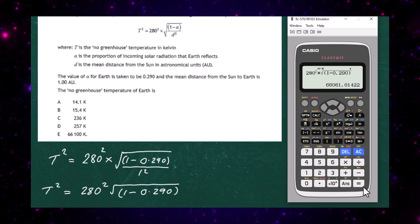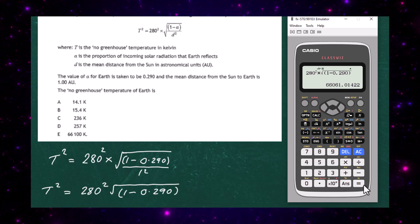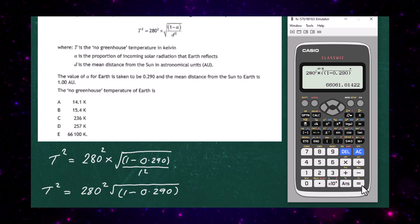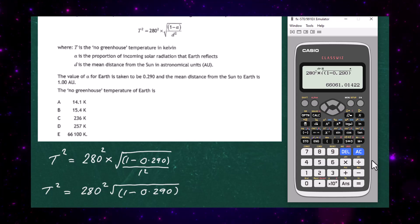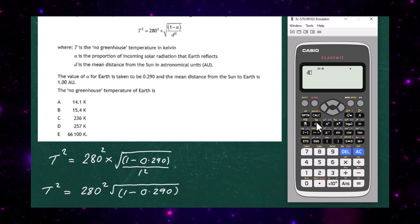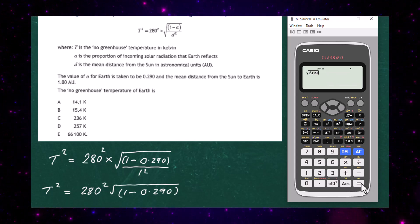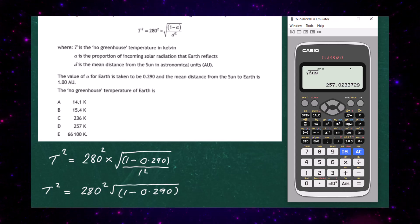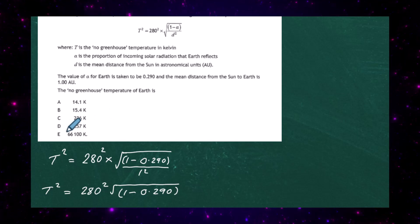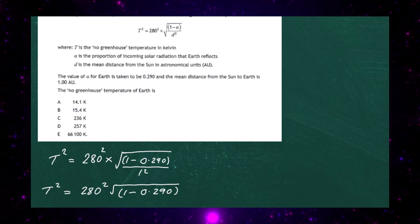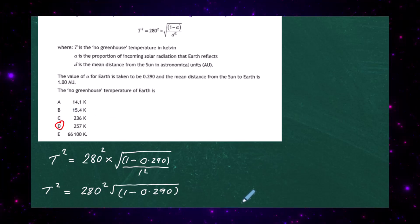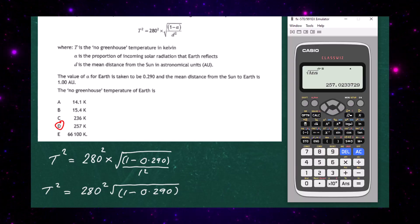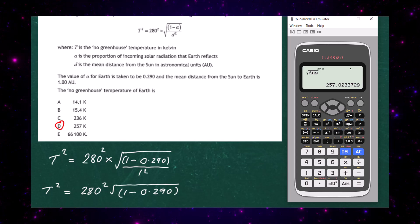That gives us the value of T², but we're after T itself, so we take the square root of that answer. That gives us 257.02. Looking at our responses, 257.02 corresponds to response D — that is our answer.